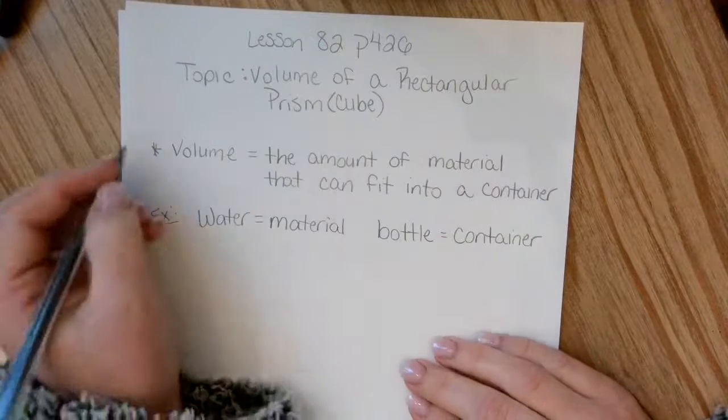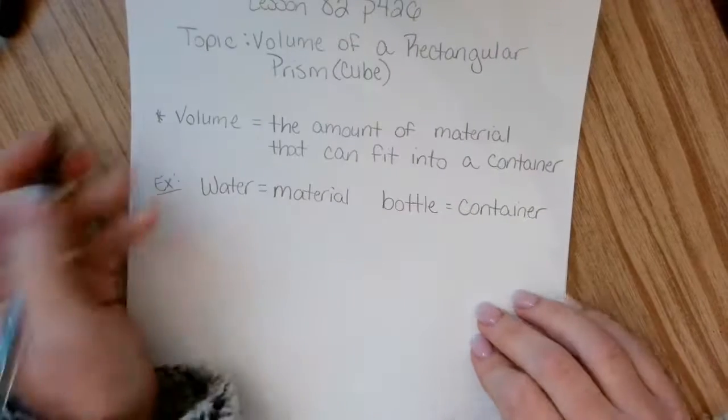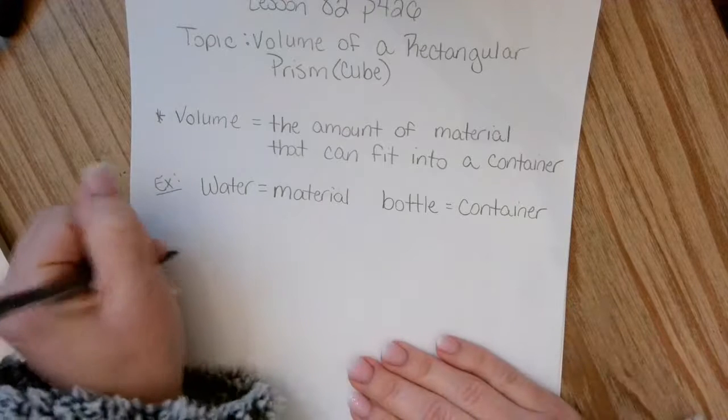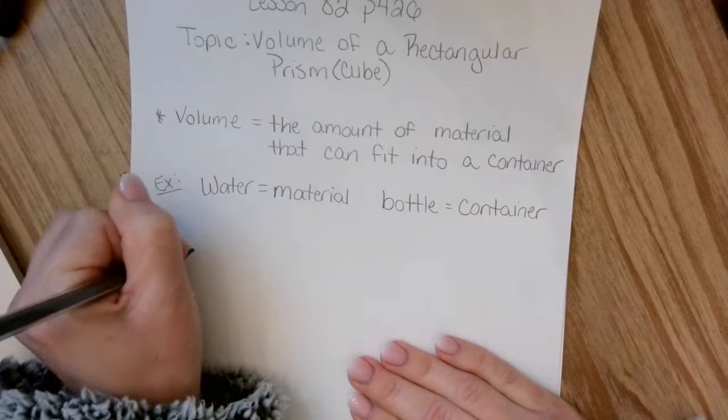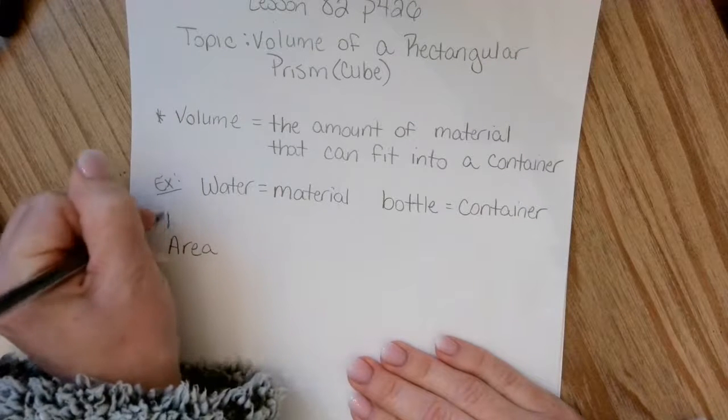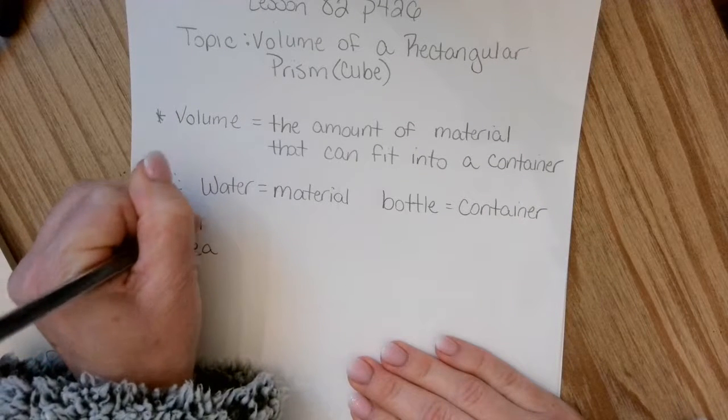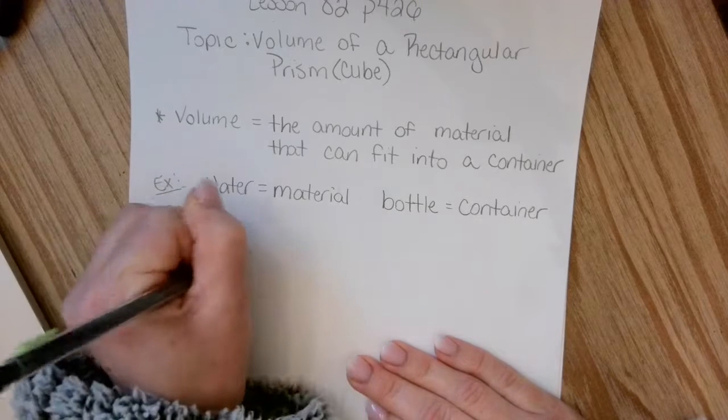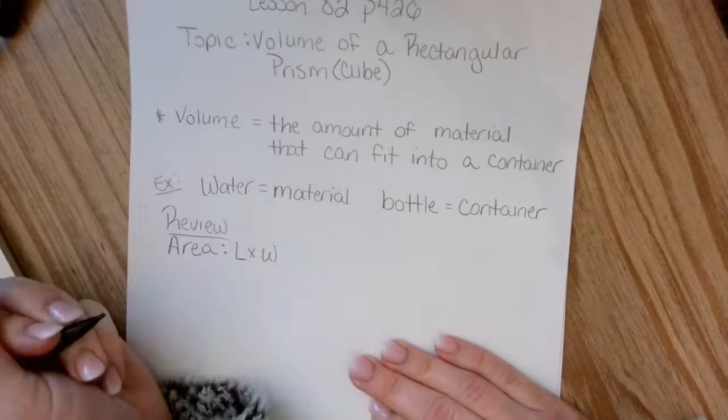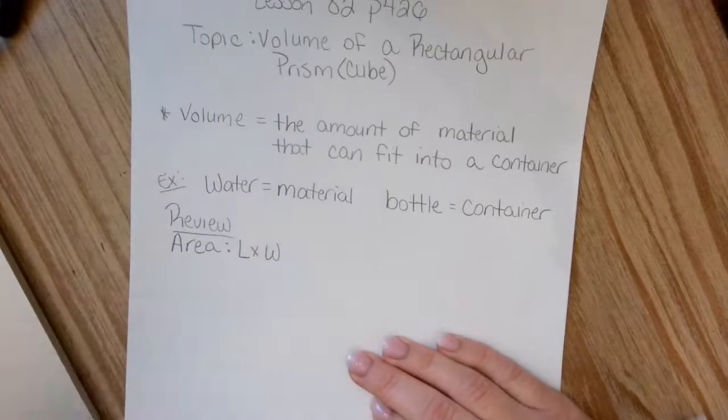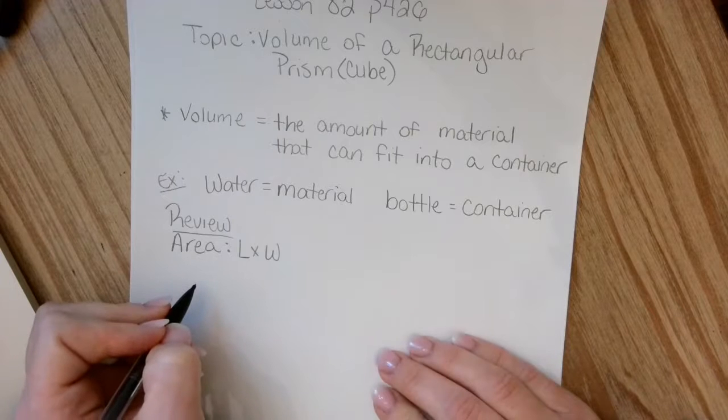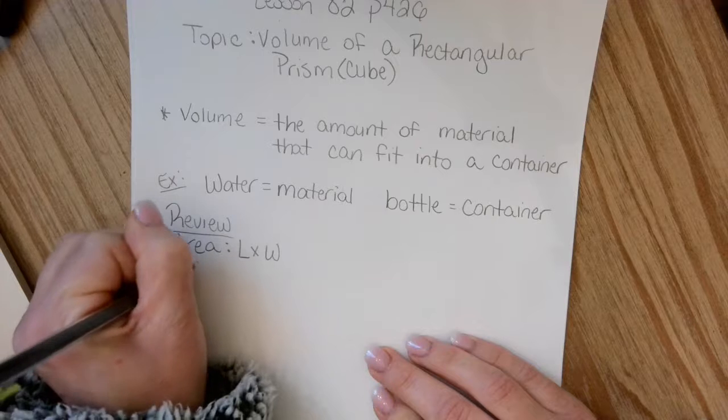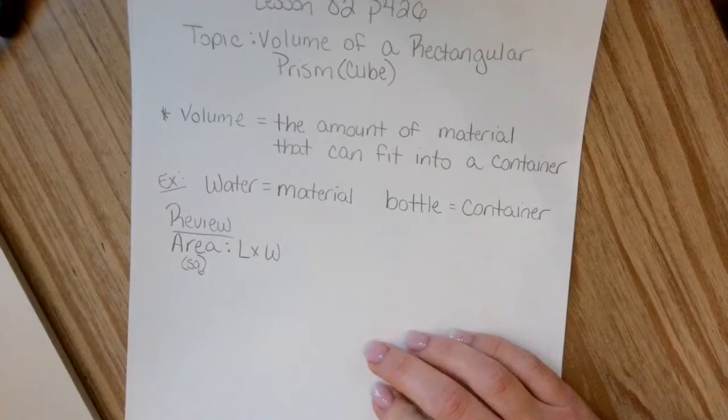So in order to do that, we have a formula for volume, just like we do for area and perimeter. So just as a reminder, to get area, we have to multiply length times width. And then remember our units have that little square on the outside of it. So I'm just going to put in parenthesis down here square, just as a reminder.